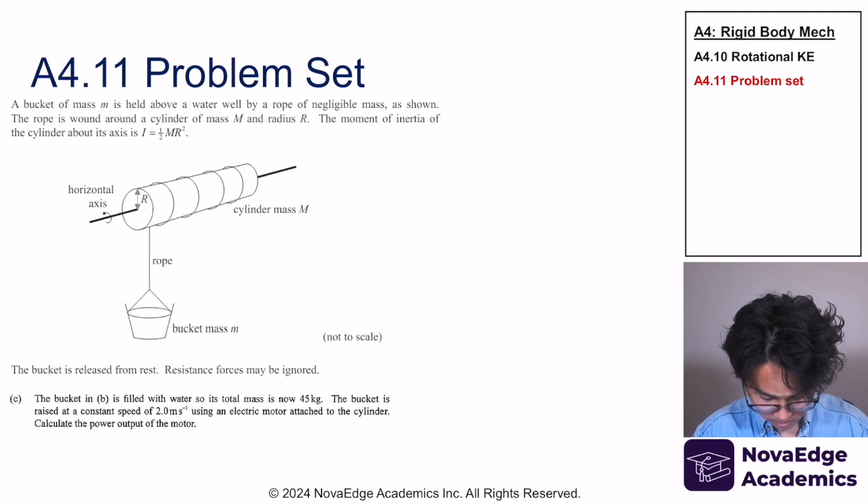Last part. The bucket in B is filled with water, so its total mass is now 45 kilograms. The bucket is raised at a constant speed of 2 meters per second using an electric motor. Calculate the power output of the motor. Well, this is simple. You have mg and you have the pulling force done by the motor.